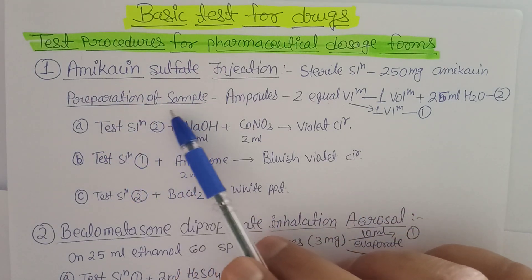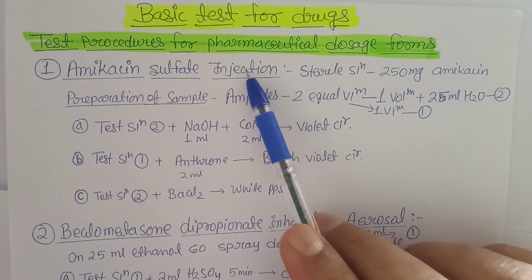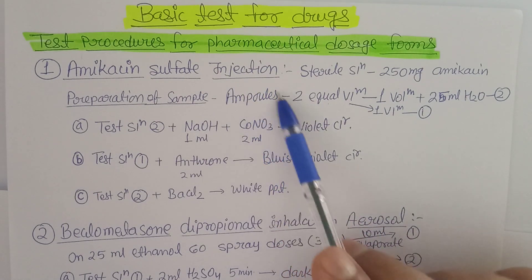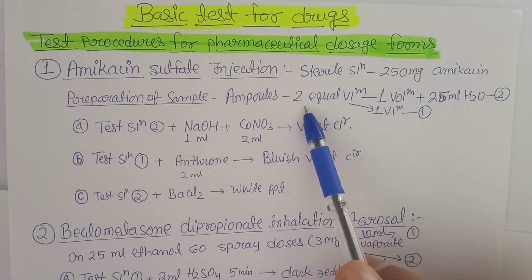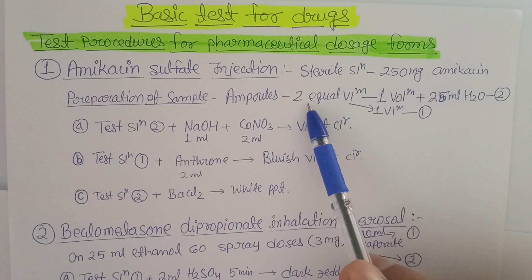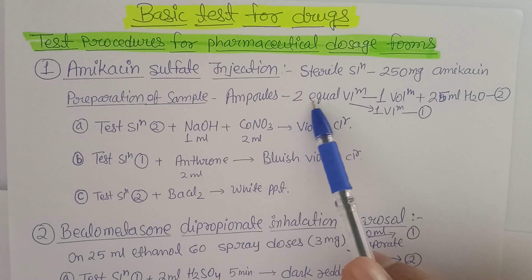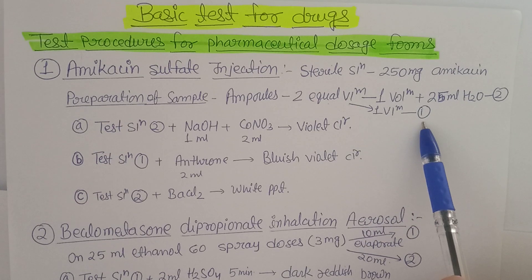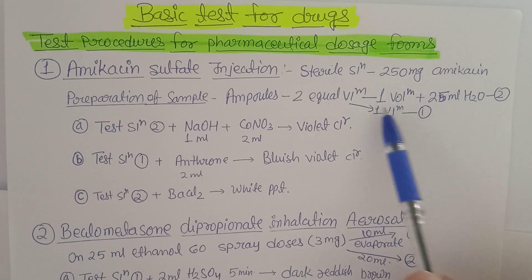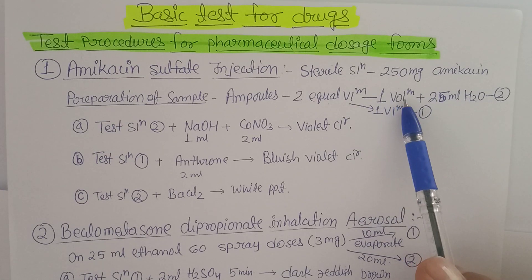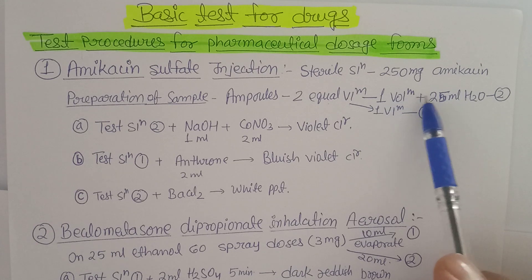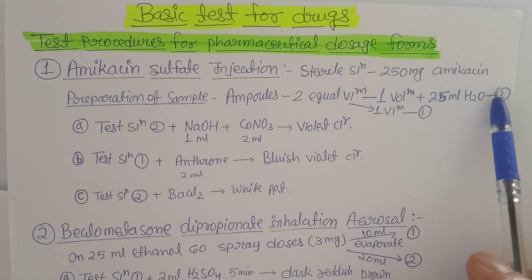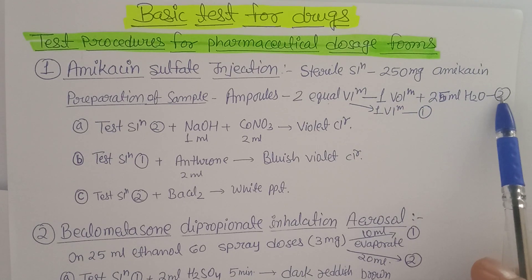For sample preparation of amikacin sulfate injection: break the ampoule and divide the entire solution into two equal volumes. Volume 1 becomes Test Sample A, and to the second volume add 25 ml of water to become Test Sample 2.